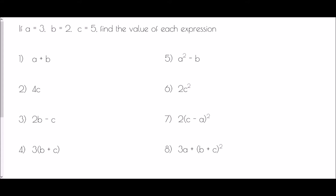Looking at the first question: a equals 3, so I'm going to replace the letter a with the number 3. The plus remains as it was, and b I'm going to replace with 2. So this expression becomes 3 plus 2, which is simply 5. In question 2, we've got 4c.